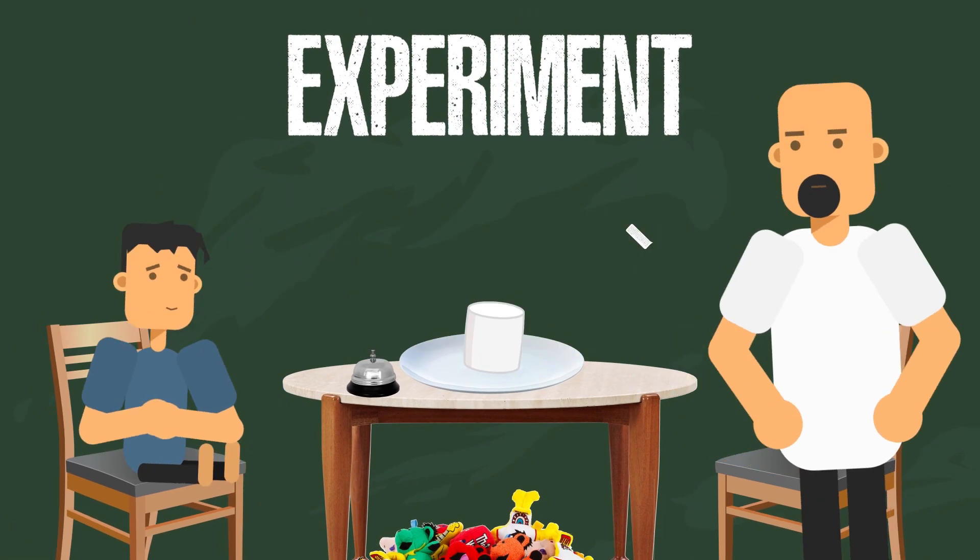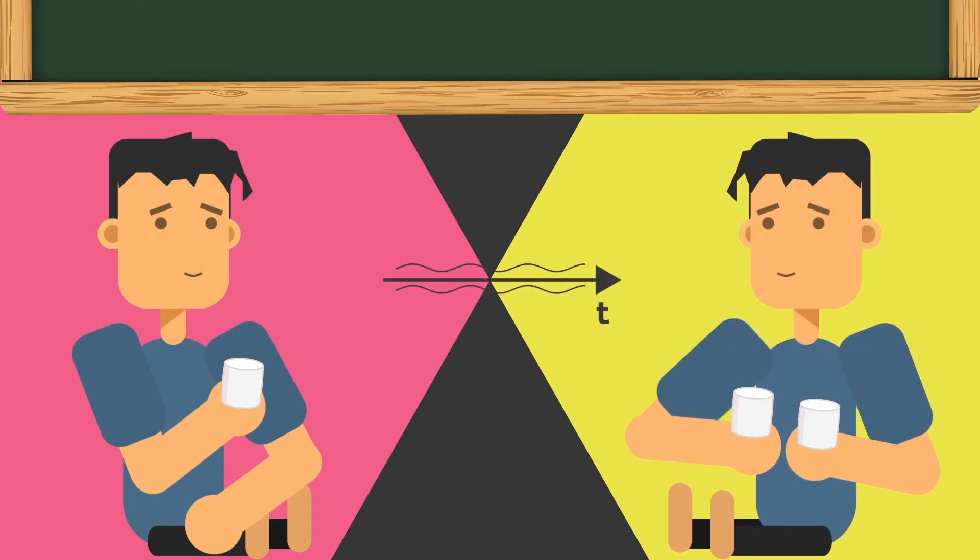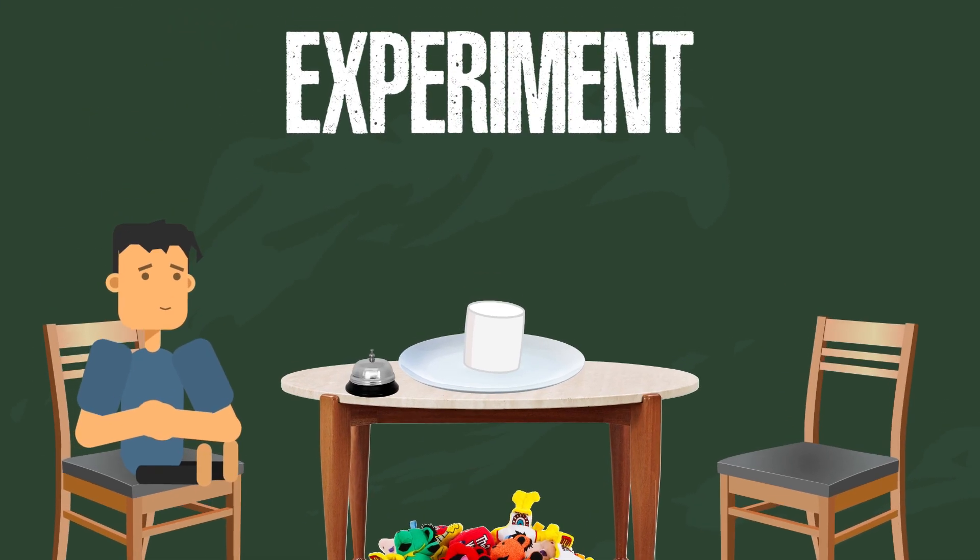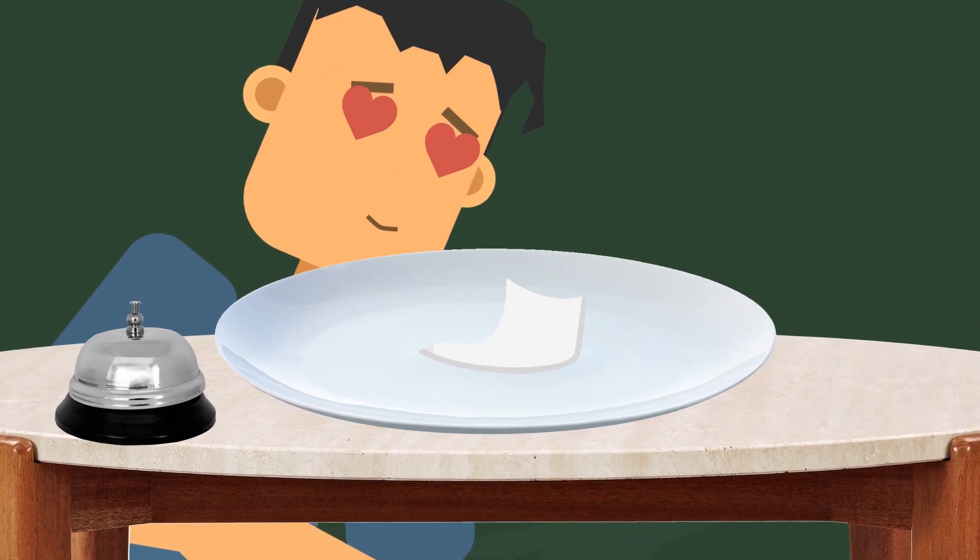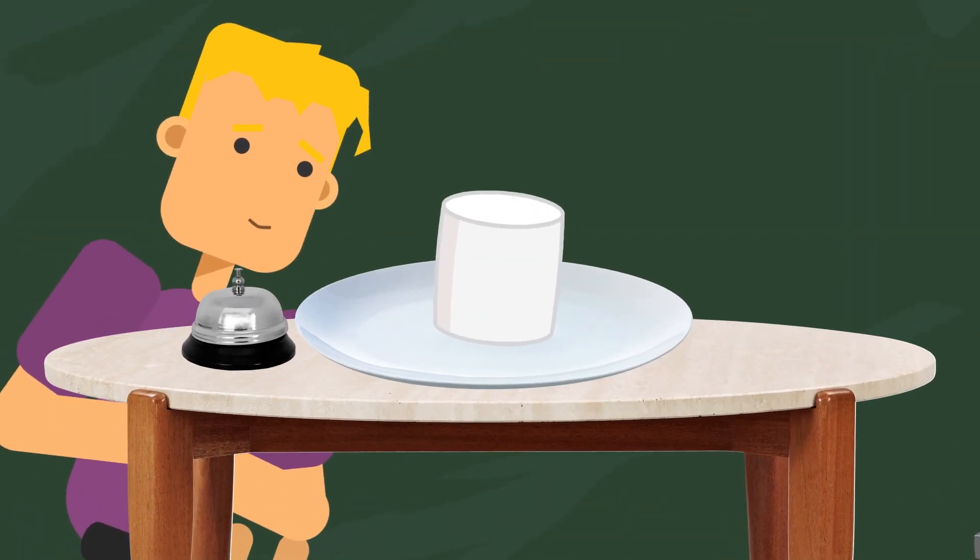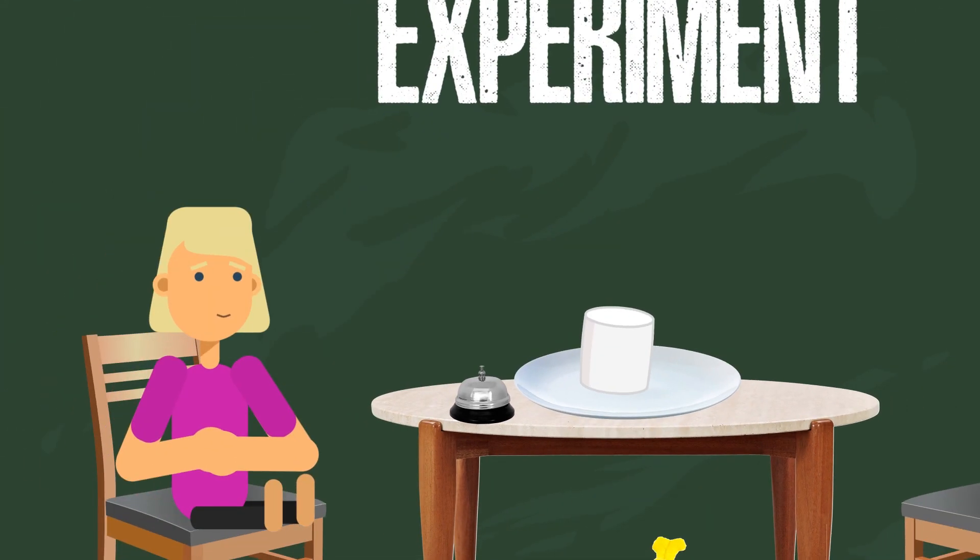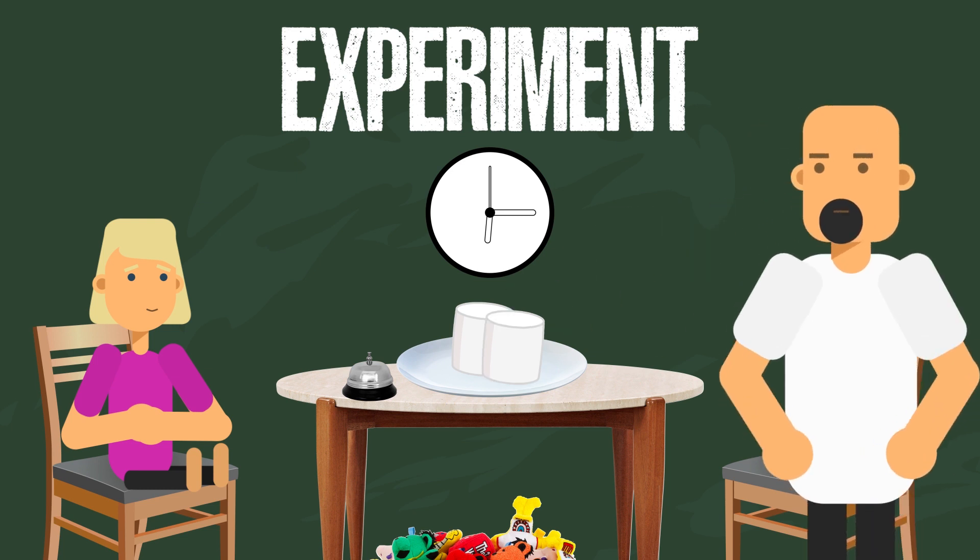The message is clear. You can either have one now or two later. Of course, there were those who couldn't even ring the bell before tasting the marshmallow. Most of the children couldn't control their desires, and sooner or later, they rang the bell and ate the marshmallow. Only a third of the participants could hold out for 15 minutes to get their prize.